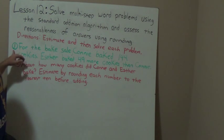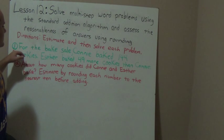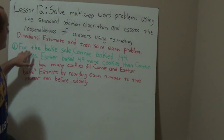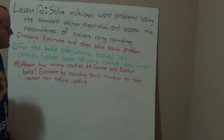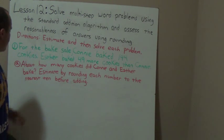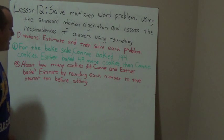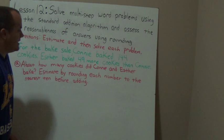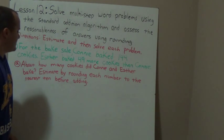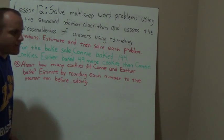This is question one from our problem set today. So follow along as we're doing this problem. It says: for the bake sale, Connie baked 144 cookies. Esther baked 49 more cookies than Connie. Letter A: about how many cookies did Connie and Esther bake? Estimate by rounding each number to the nearest 10 before adding.